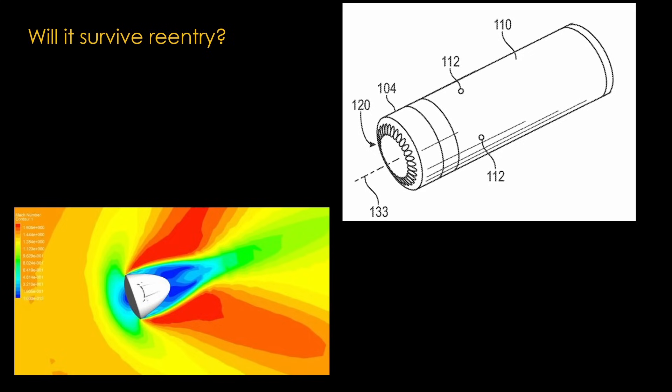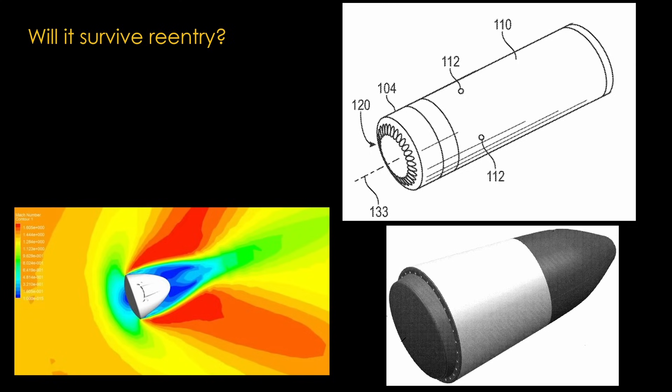That is based on the fairing not coming along for reentry. If there's a longer fairing, then this is a harder problem. The Stoke design uses a shape that is much more capsule-shaped and will likely have fewer reentry heating issues.